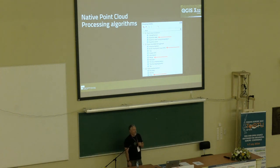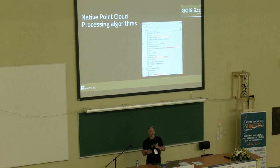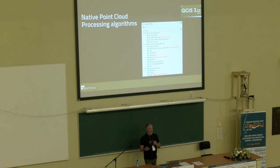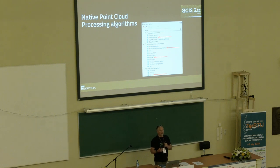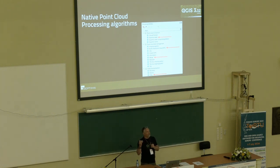Moving on to point clouds: at QGIS 3.32 there was a lot of functionality added, including native QGIS processing algorithms. There are now something like 17 different processing algorithms in QGIS for point clouds, divided into point cloud conversion, point cloud data management, and point cloud extraction.